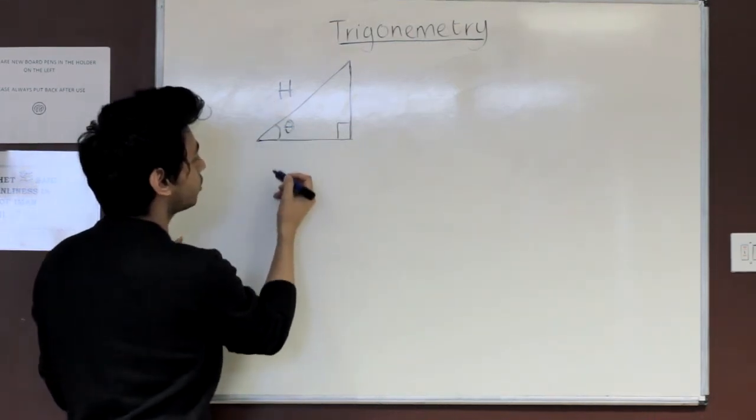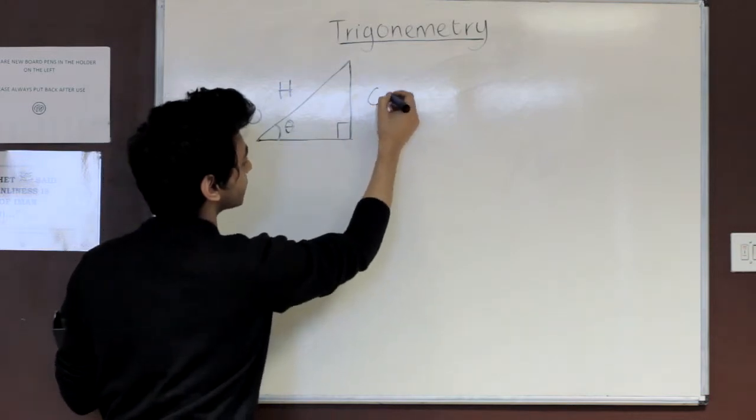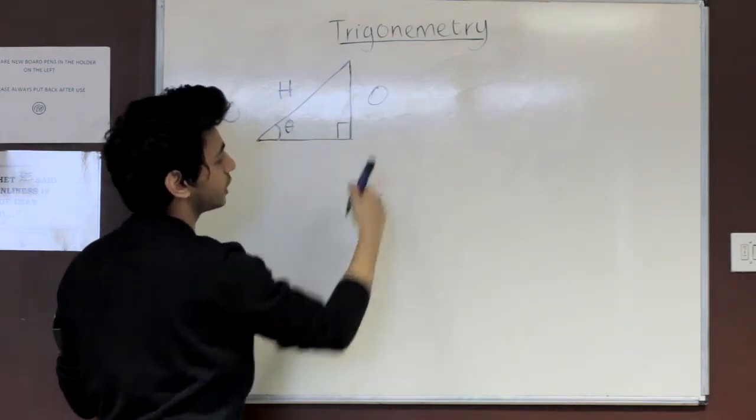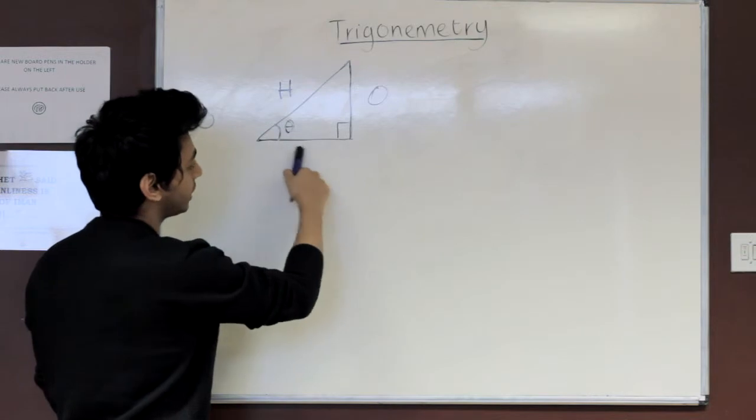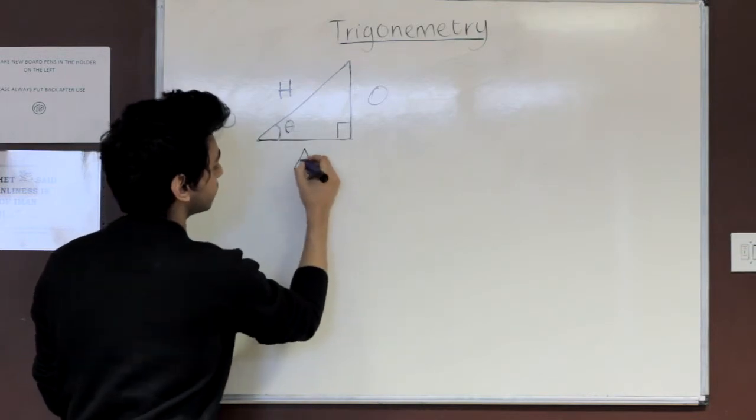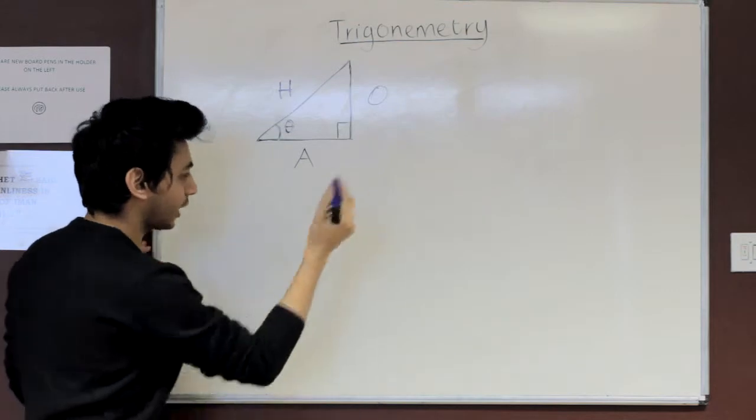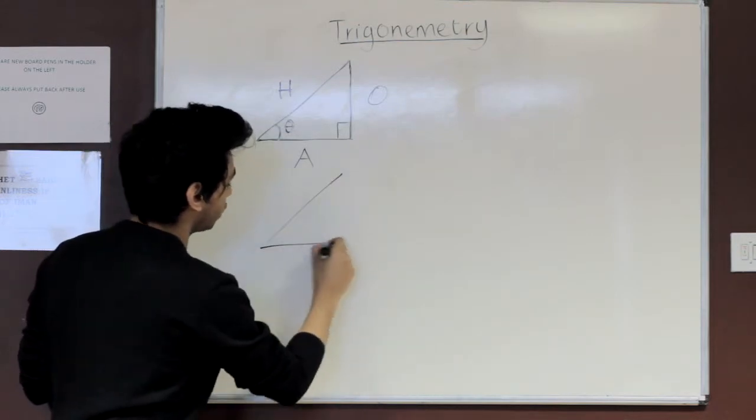When you are given an angle, the side that is opposite our angle we denote as our opposite. So we label this as O. And the final remaining side is going to be our adjacent, which is adjacent to our angle.